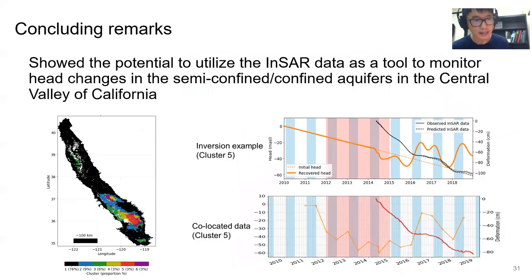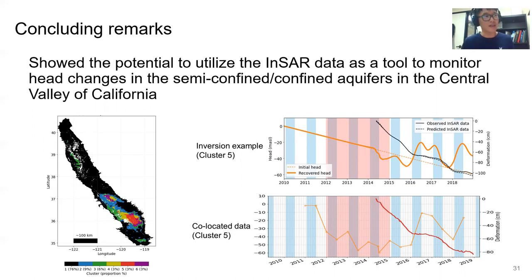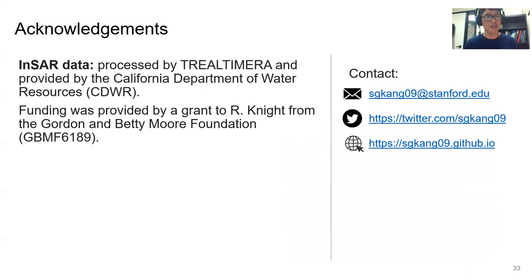In conclusion, despite remaining challenges such as jointly estimating geomechanical properties of clays and head measurements from InSAR data, we showed the potential to utilize InSAR data as a tool to monitor head changes in semi-confined or confined aquifers in the Central Valley of California. We are excited to extend this study to the entire Central Valley to recover head measurements from InSAR data valley-wide. Thank you very much, and we appreciate all the funders and collaborators of this study.